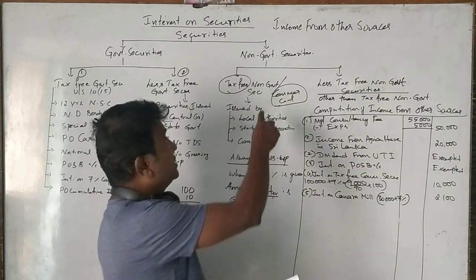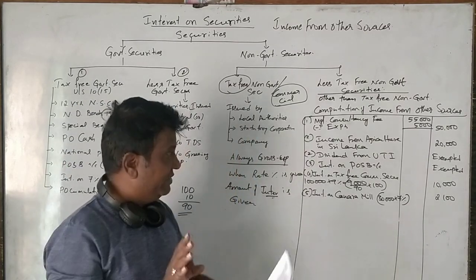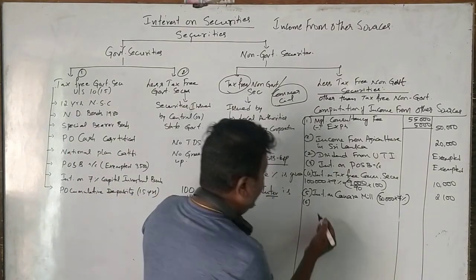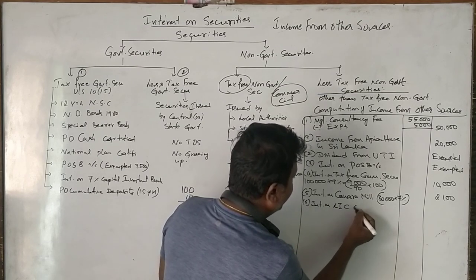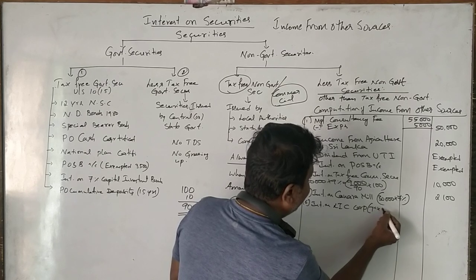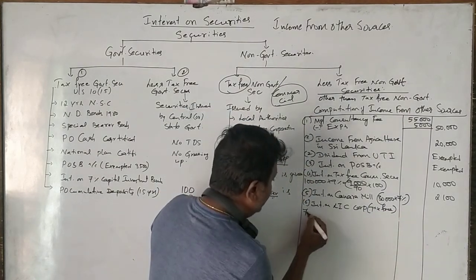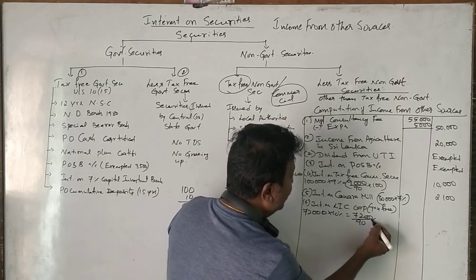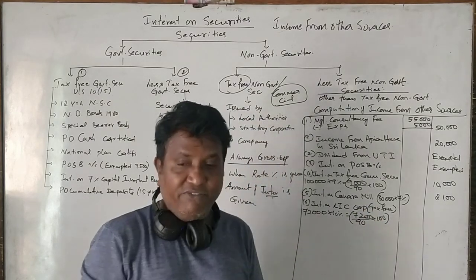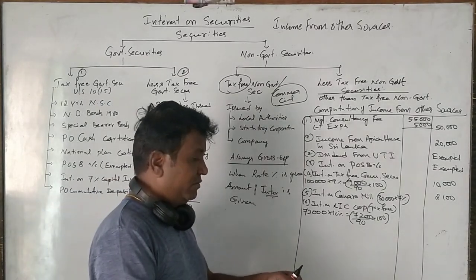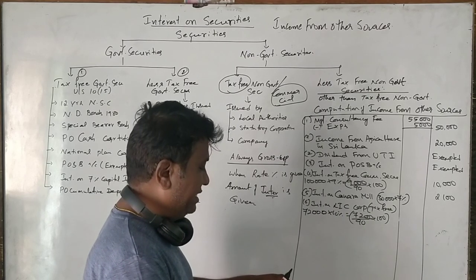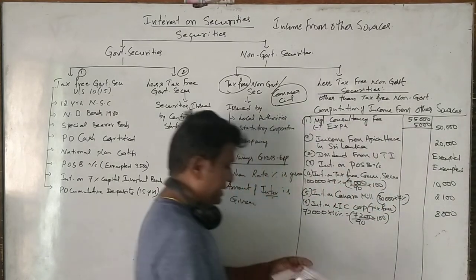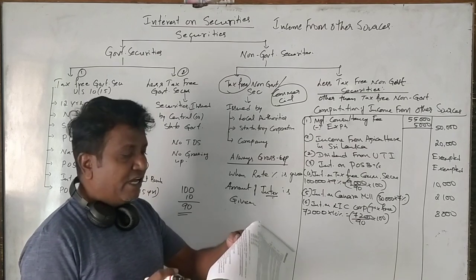Next is 72,000 of 10% tax-free debentures of LIC India. Since 'tax-free' is mentioned, we treat it similarly to the commercial securities and gross up. Interest on LIC (tax-free) on 72,000 at 10% is 7,200 rupees. Grossing up: 7,200 divided by 90% equals 8,000 rupees, which is the taxable gross amount after grossing up.